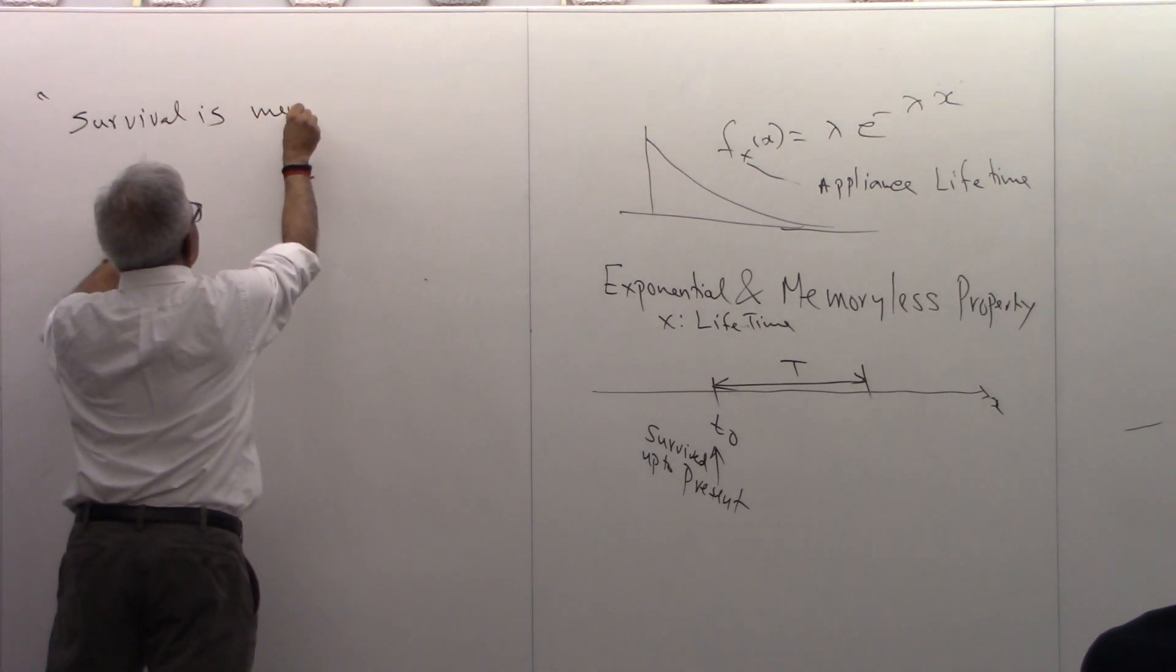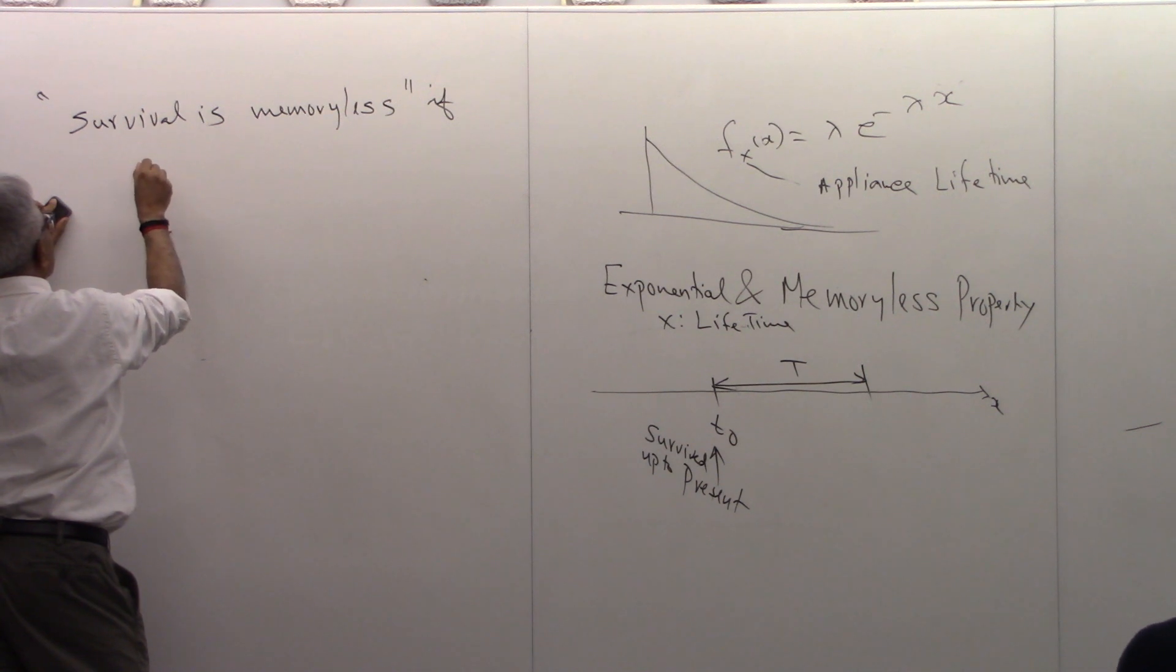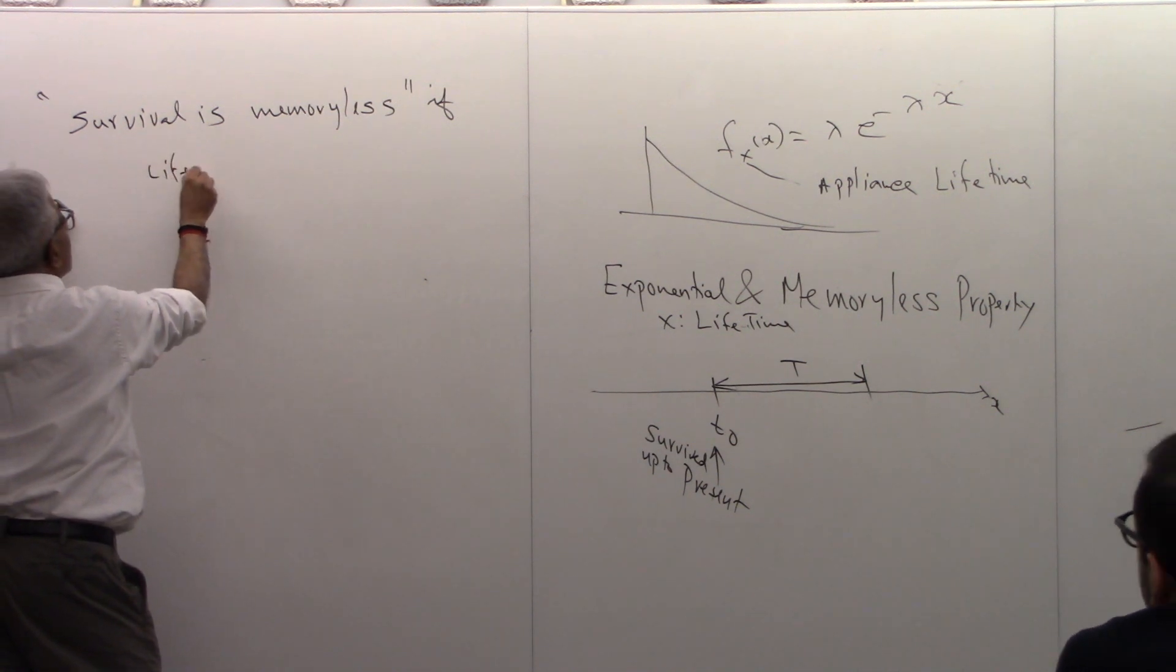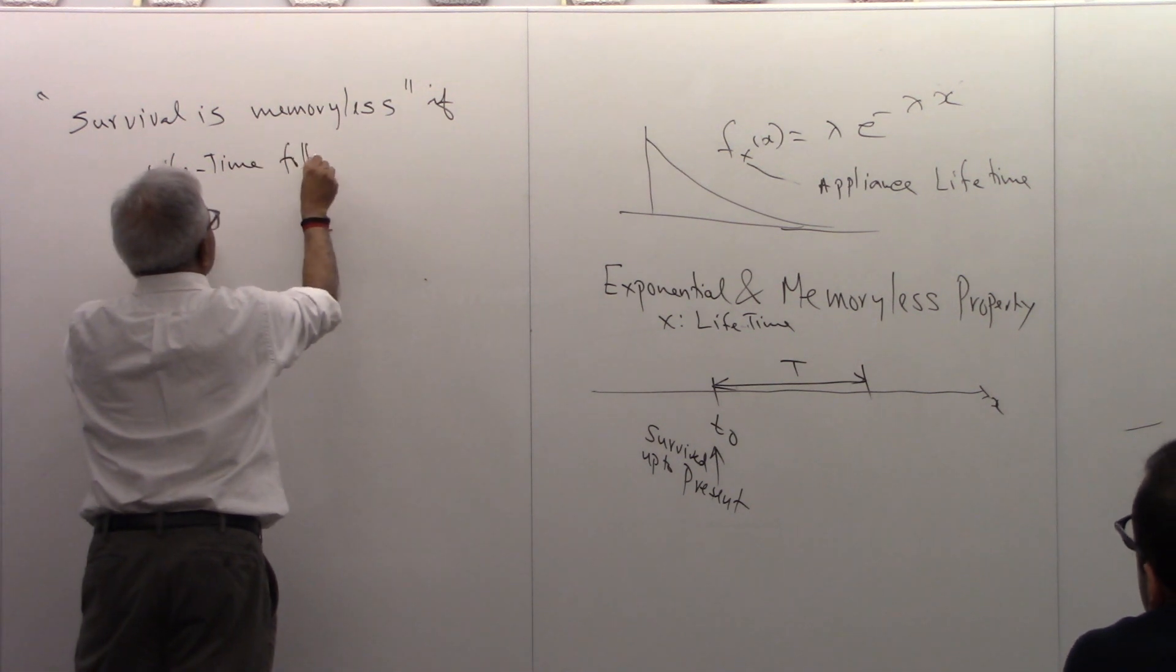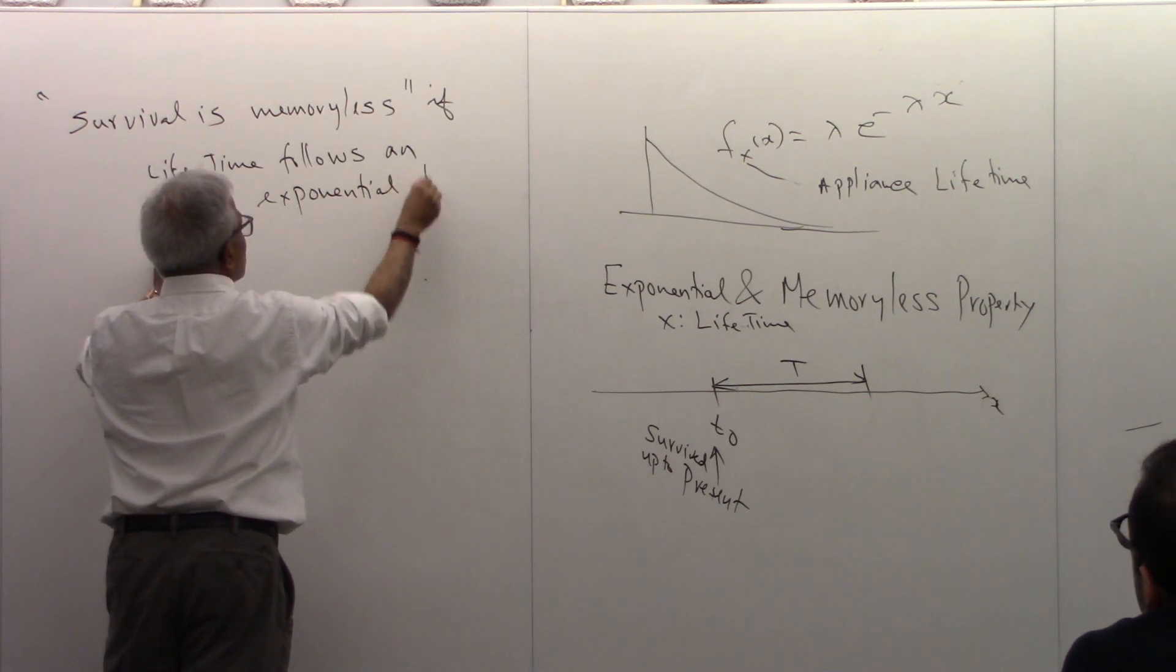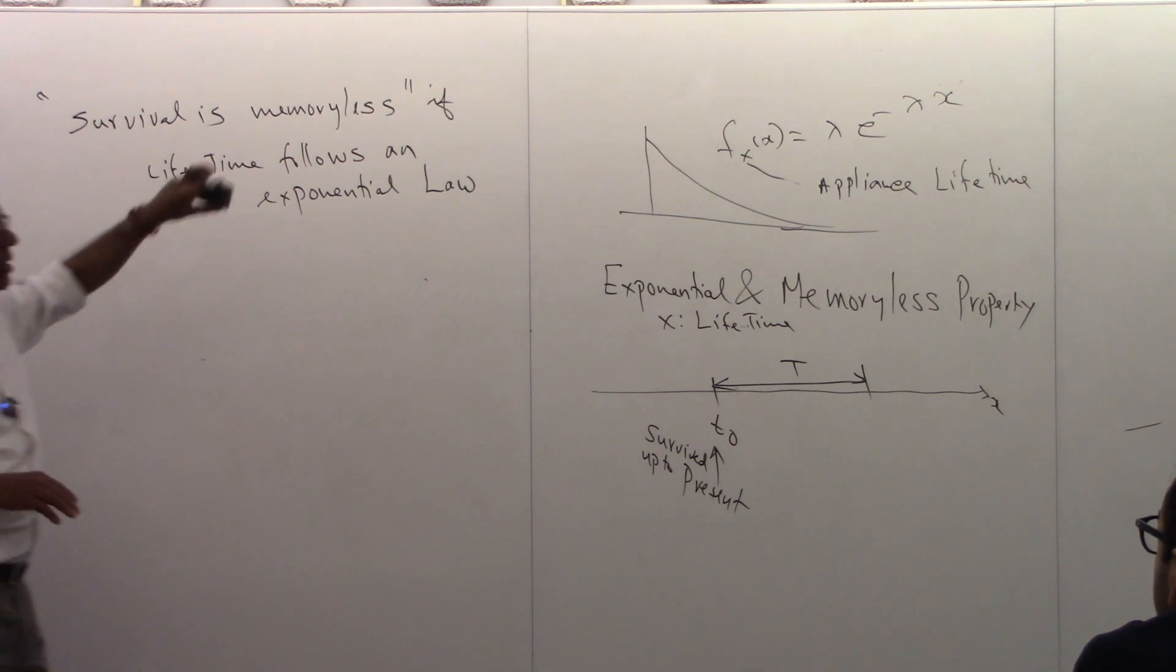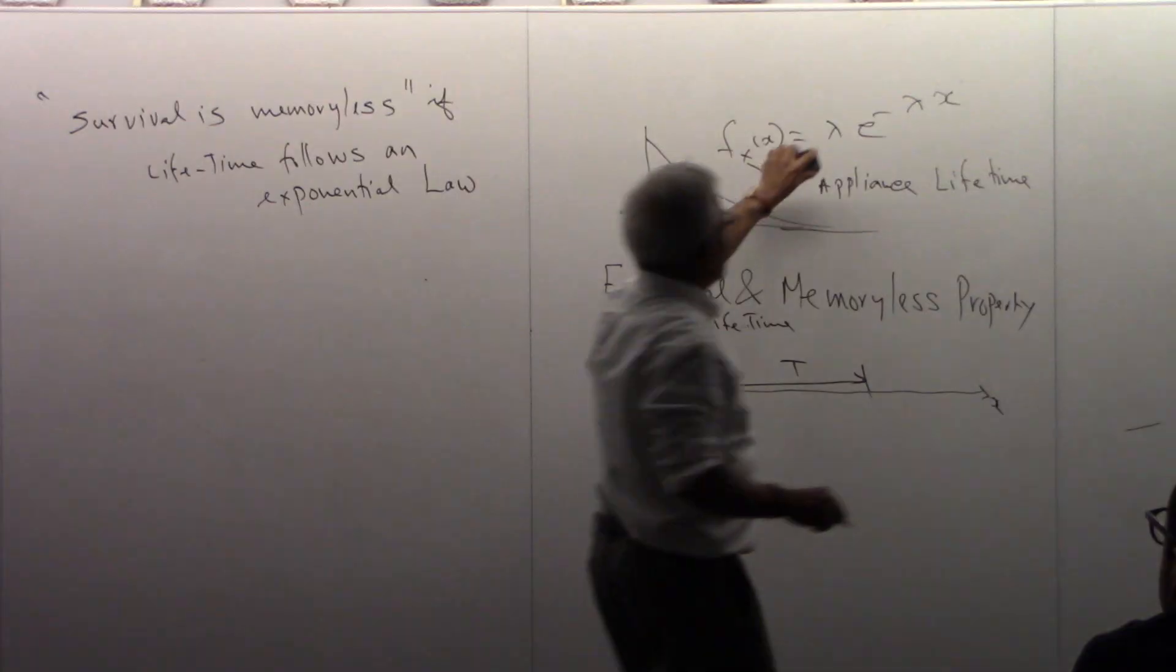So this may not be true. I'm going to prove this. I'm going to show that the probability of survival is a memoryless process. A memoryless event if the lifetime—lifetime is after all a random variable. None of us have any idea when we are going to collapse. But if you assume that the lifetime follows an exponential law, it is true.